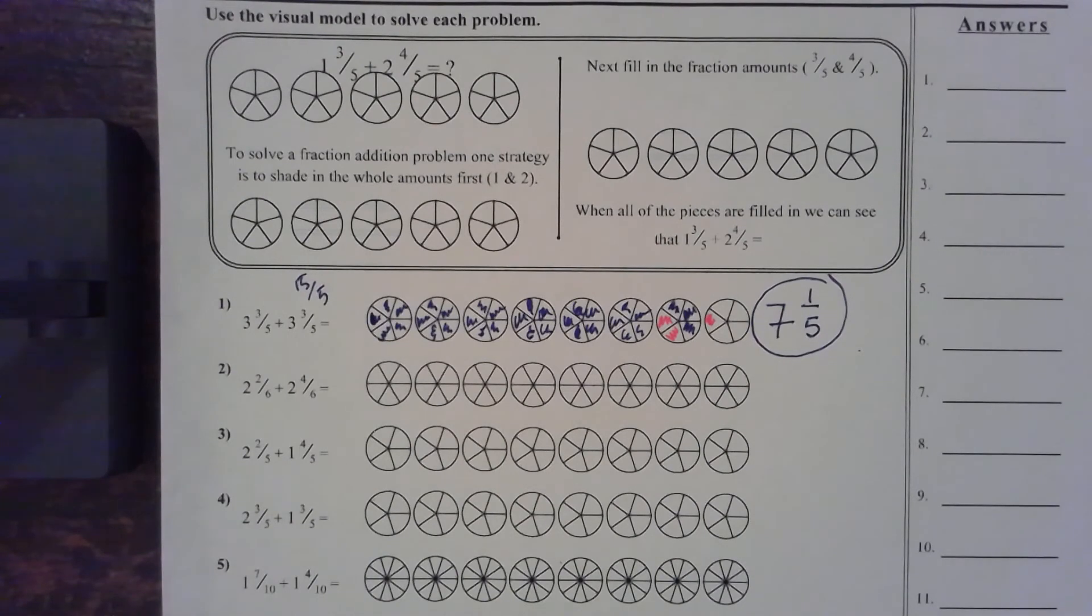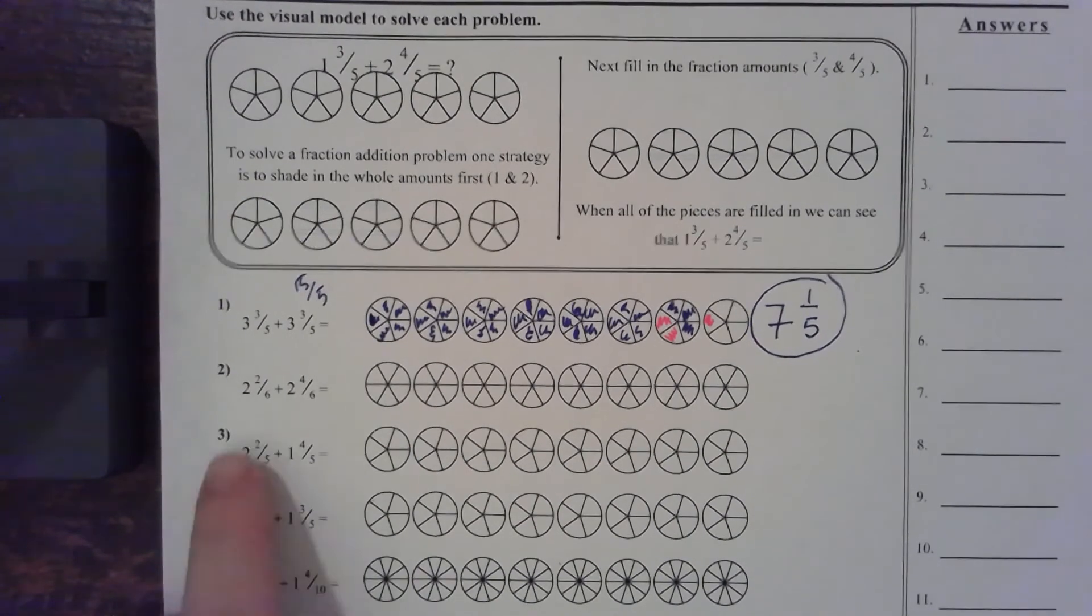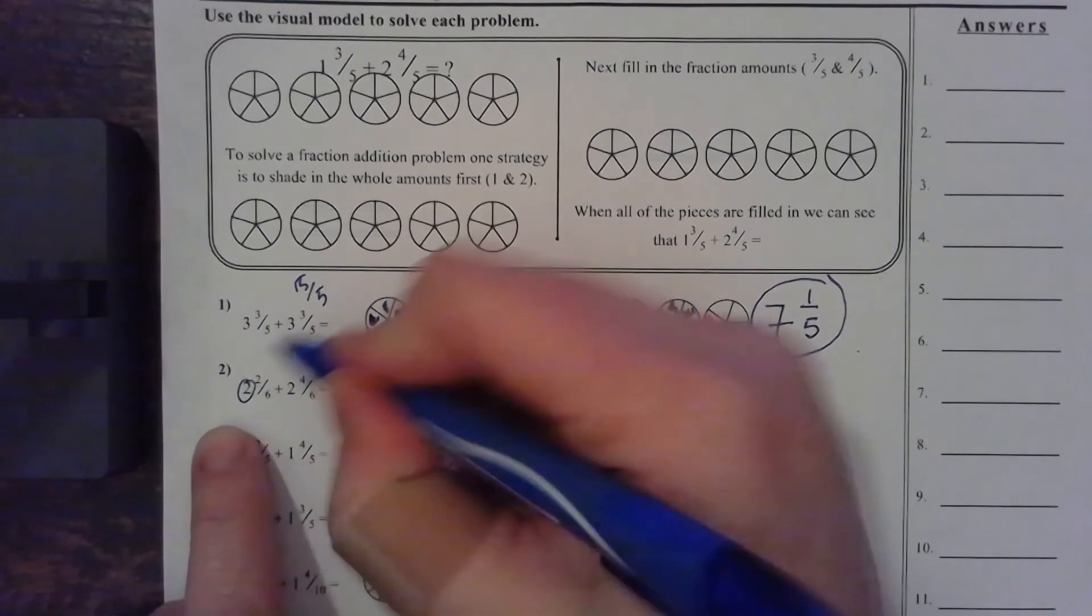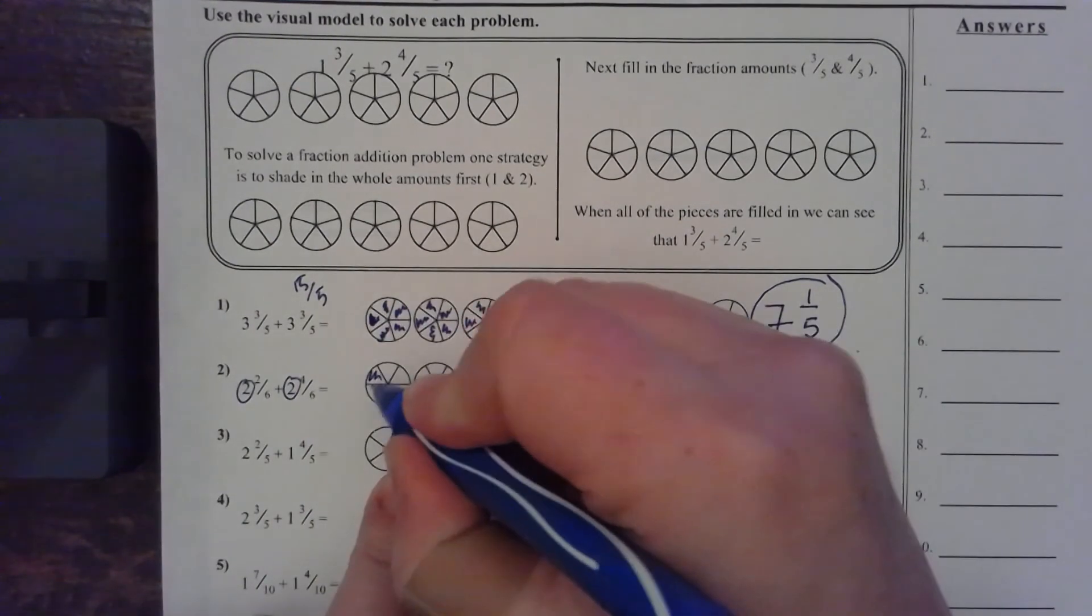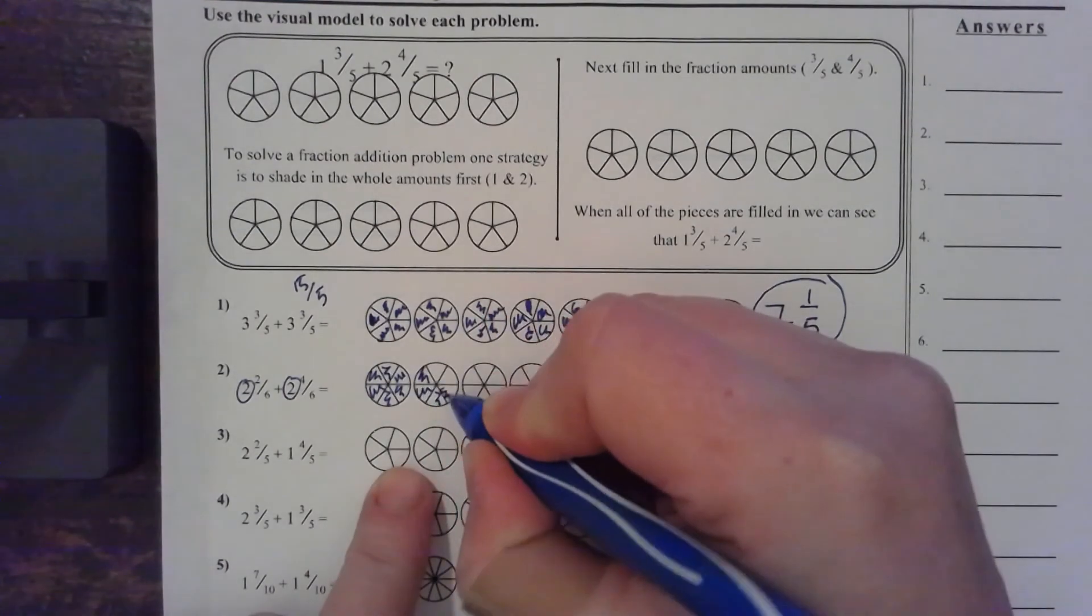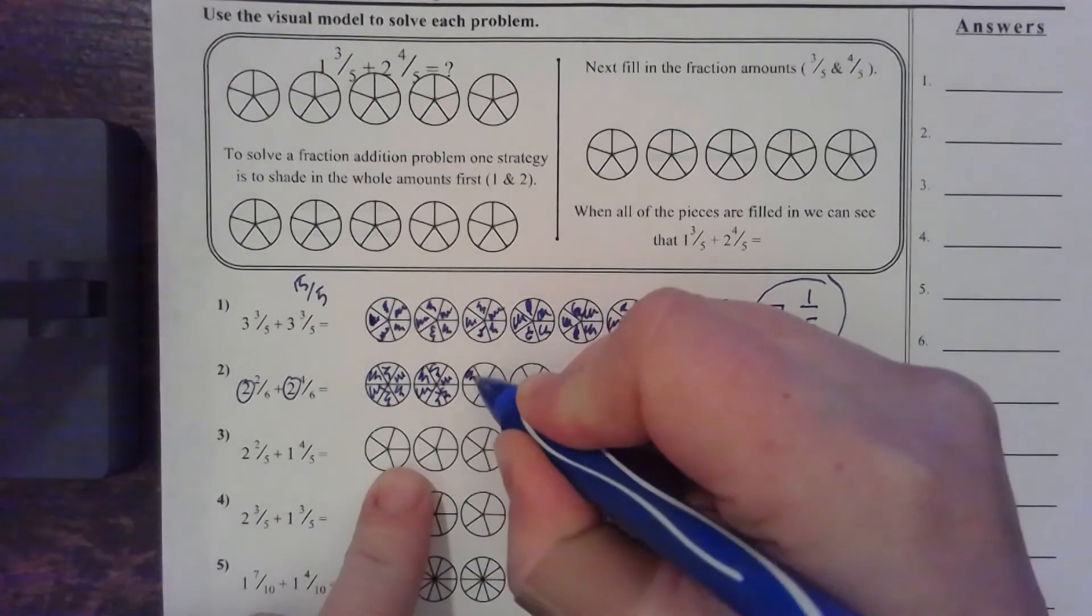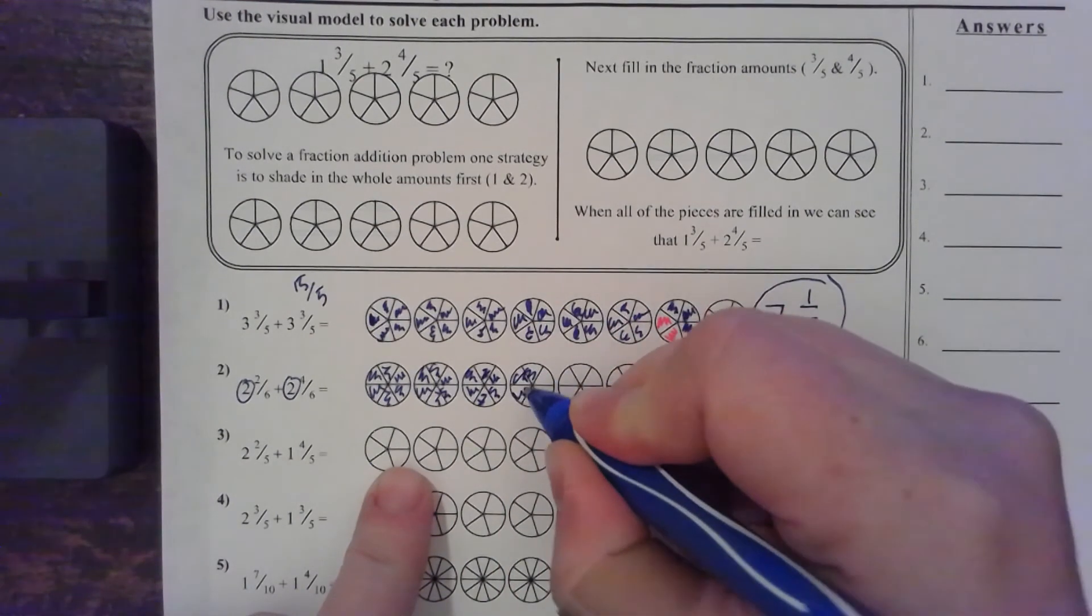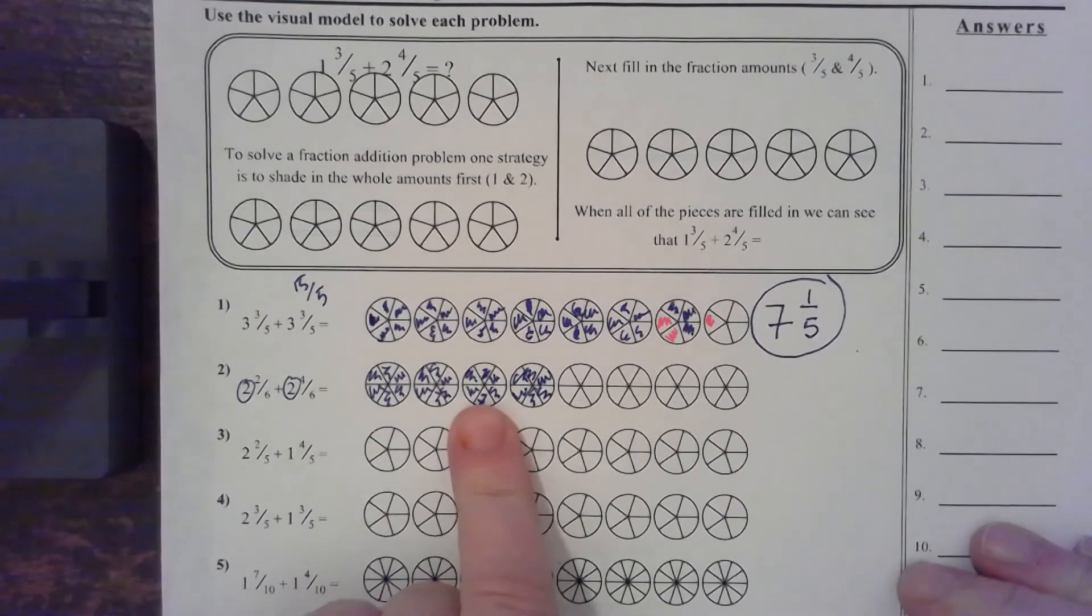We're just going to go two plus two, which is four. So, number two is two and two-sixths plus two and four-sixths. So, like we did before, we're going to go two plus two, which is four. So, I'm going to color in four of these circles. So, I colored in four of these circles.